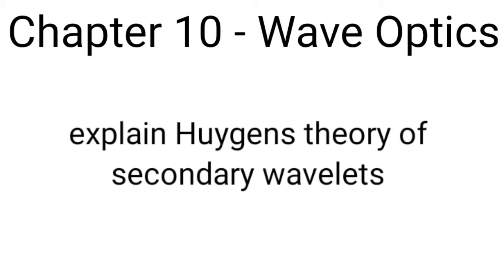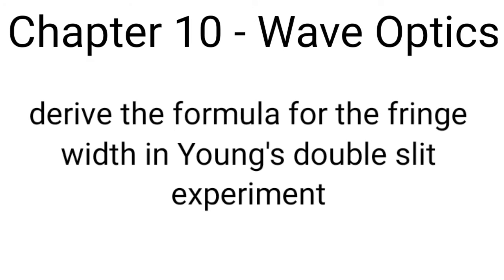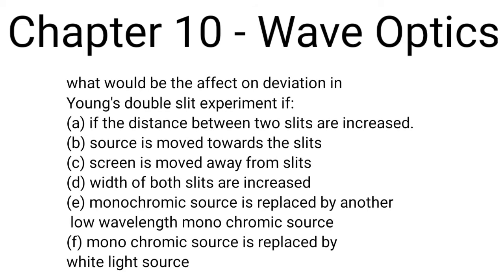Next question is: expand Huygens theory of secondary wavelets. Next question is: derive the formula for fringe width in Young's double slit experiment. Next question is: what would be the effect on the fringe pattern in Young's double slit experiment if — first, the distance between two slits is increased; second, the source is moved toward the slits; third, the screen is moved away from slits; fourth, the width of both slits are increased; fifth, the monochromatic source is replaced by one of lower wavelength; sixth, the monochromatic source is replaced by a white light source.